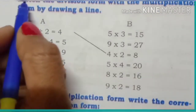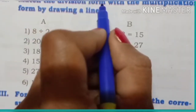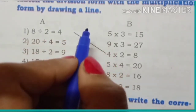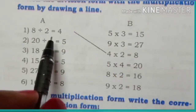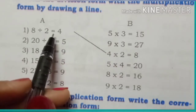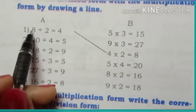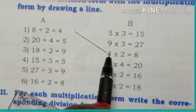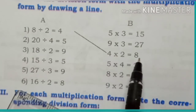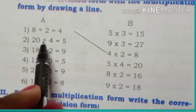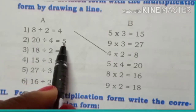Now we are going to the second part: match the division form with the multiplication form by drawing a line. First: 8 divided by 2 is equal to 4, matched with 4 multiplied by 2 is equal to 8. Second: 20 divided by 4 is equal to 5, matched with 5 multiplied by 4 is equal to 20.